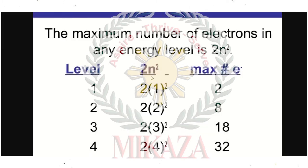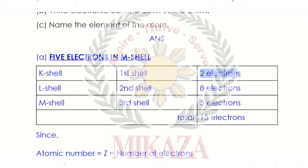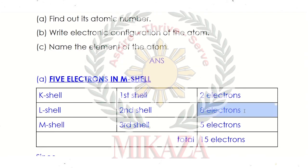We use the formula 2n². For the first shell (n=1): 2×1²=2 electrons. For the second shell (n=2): 2×2²=8 electrons. We will not use the formula for the third shell because the question says it has 5 electrons. So we have calculated K shell = 2 electrons and L shell = 8 electrons. Adding them: 2 + 8 + 5 = 15 electrons total.